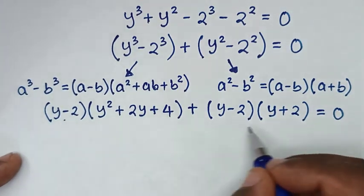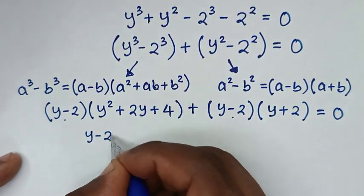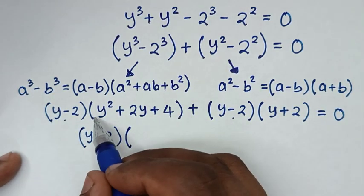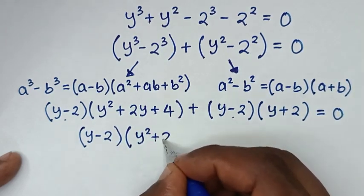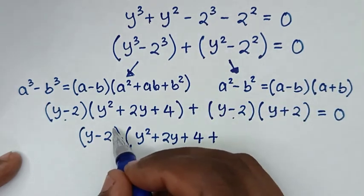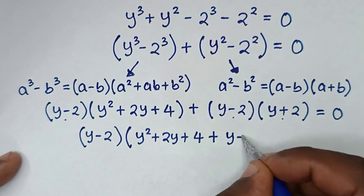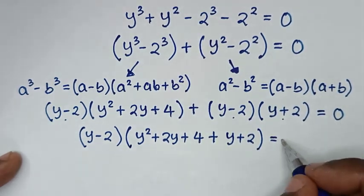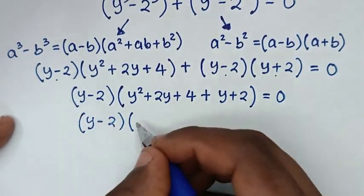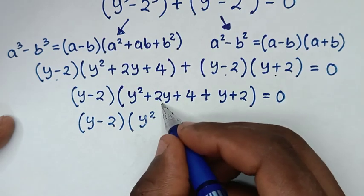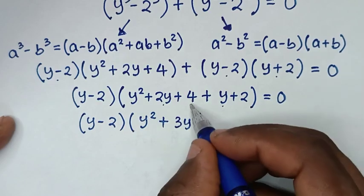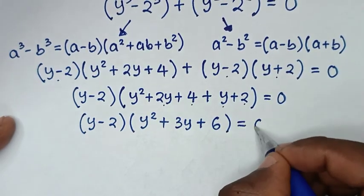Since (y minus 2) is a common factor, we take it out. Dividing through gives the quadratic expression y squared plus 2y plus 4, plus y plus 2 from the second term. Combining like terms gives (y minus 2)(y squared plus 3y plus 6) equals 0.